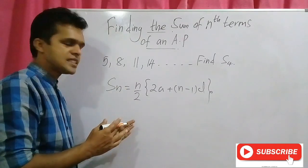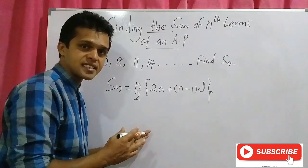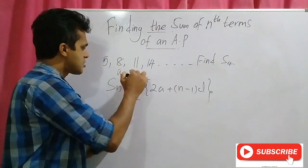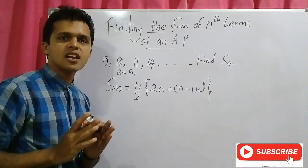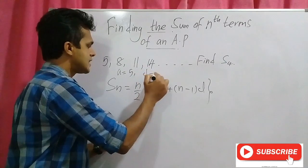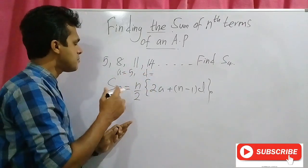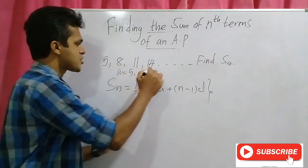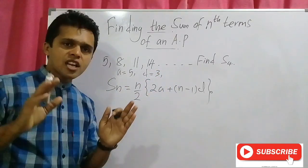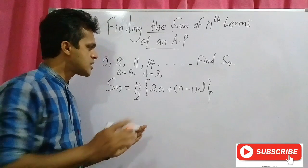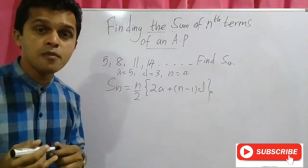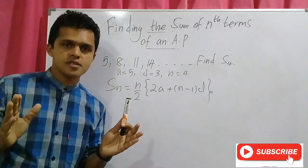First, let's find the values. a equals 5. d equals the second term minus the first term: 8 minus 5, so d equals 3. n equals 4 — we are going to find the sum of the first four terms.